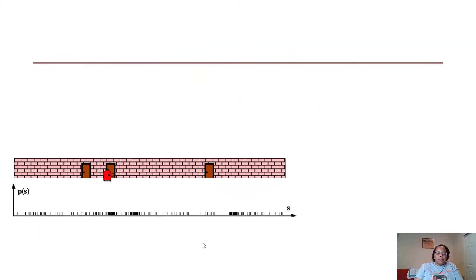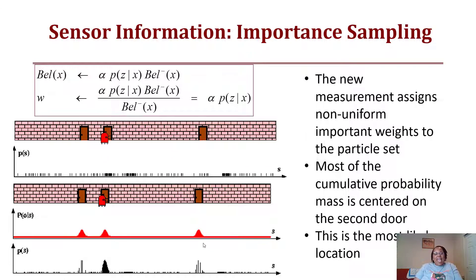Now once I add my sensor data in, I now have my belief and I have my weight based upon my belief, so it's alpha the probability of z given x and I now have my new measurements.